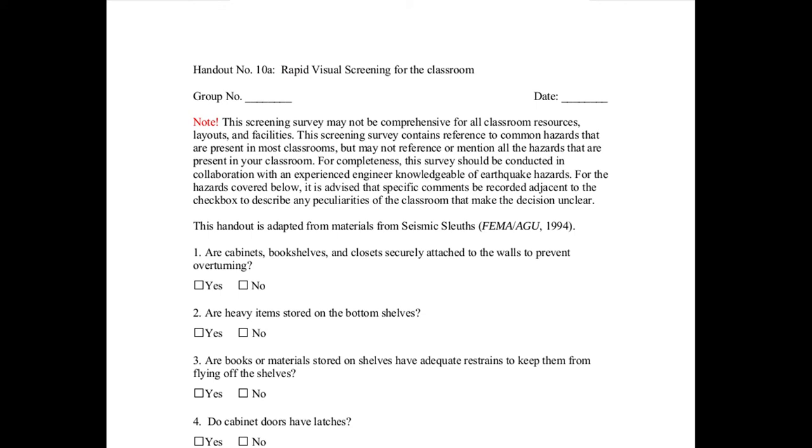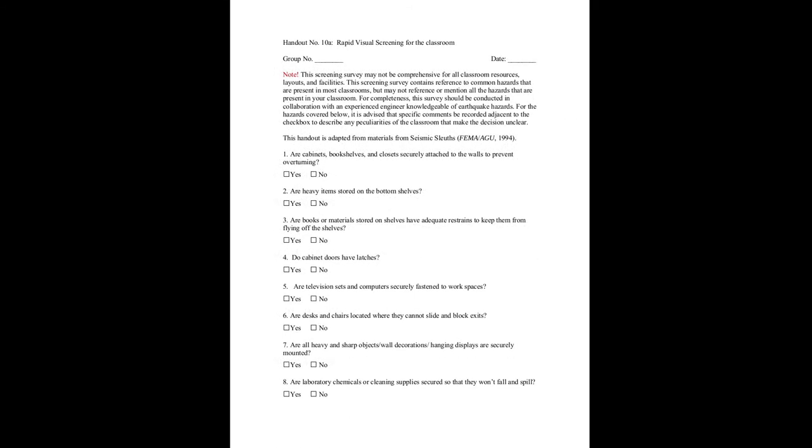You will walk around and answer questions written on this handout — the answers are yes or no. Place a check mark in the yes or no box relevant to each question. If there are questions you're not sure about, simply write 'I don't know.' If there are questions not shown on the list that you think should be added, feel free to add them. If questions seem irrelevant because you don't have those elements in your classroom, just skip them. This handout is a checklist that many experts use to identify non-structural hazards in classrooms and other spaces.